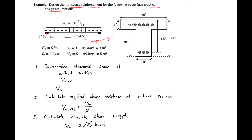We can also see that our beam will be in positive bending, so our bottom steel is our tension steel. Our d is from the compression face to the centroid of our tension steel, so our d is going to be 21.5 inches.